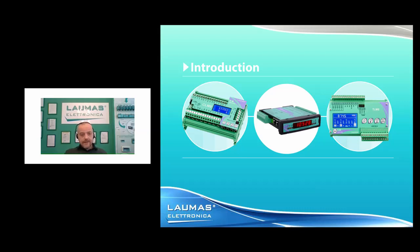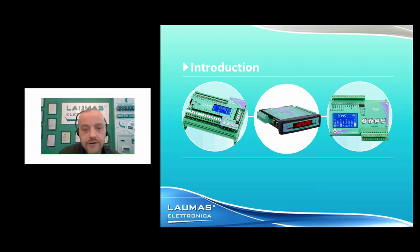The basic idea behind our multi-channel weight transmitters is to make it simpler, smarter, and faster to install and manage a weighing system composed of more than one load cell — transforming the weighing system from analog to digital. Our multi-channel weight transmitters are divided into three main families: the CLM8 on the left, the TLB4 in the center, and the TLM8 on the right.